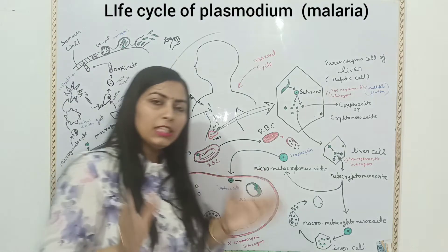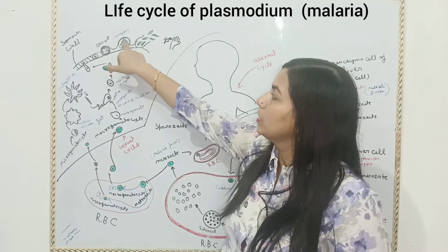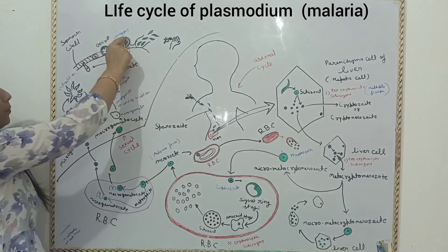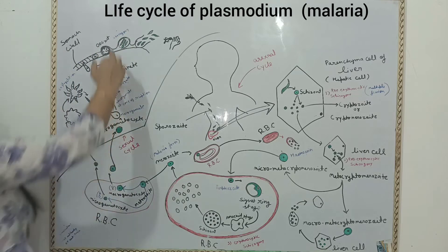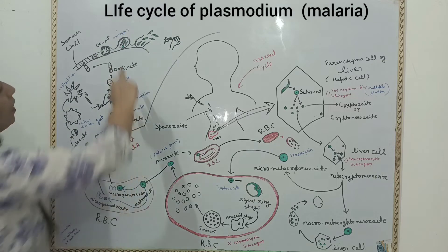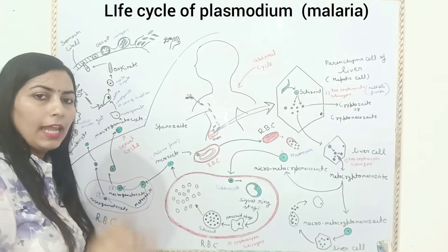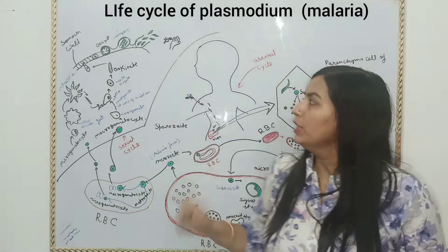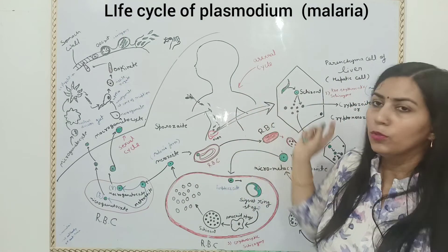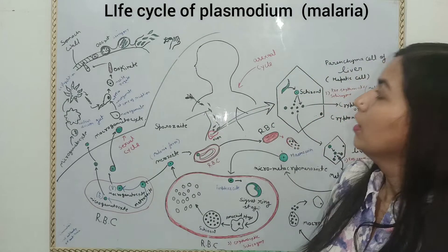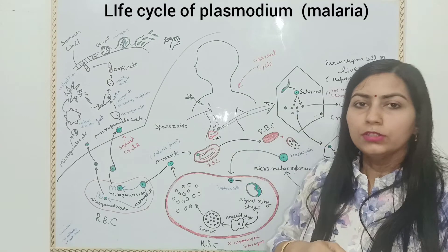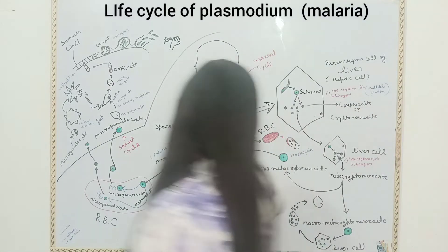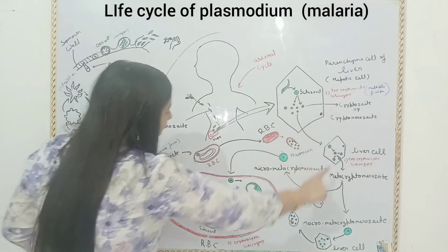The division of the nucleus takes place in the oocyst and formation of sporozoites takes place. When sporozoites form in large numbers, they create pressure on the oocyst wall. The wall ruptures and sporozoites are released into the mosquito. These sporozoites enter into the salivary gland of the female Anopheles mosquito. When this infected Anopheles mosquito bites a healthy person, it injects its sporozoites with saliva, and sporozoites enter into the human body, and this cycle takes place again and again.